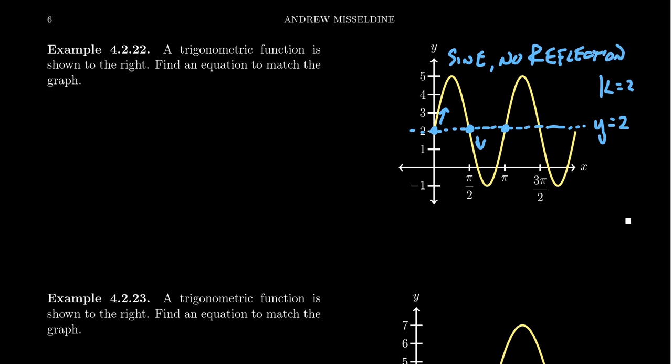Our basic function is supposed to look like y equals k plus a sine of b times x minus h. So we've already identified that there is a shift of some kind, so we're going to end up with y equals 2 plus.